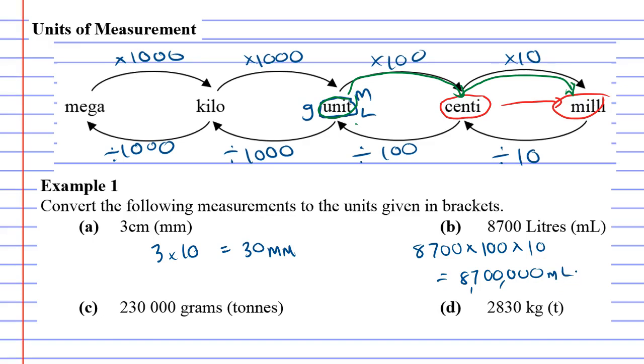Let's do question C in red. We're going from grams to tons. Grams is the unit because there's no prefix, and we learned that a ton is actually a megagram.